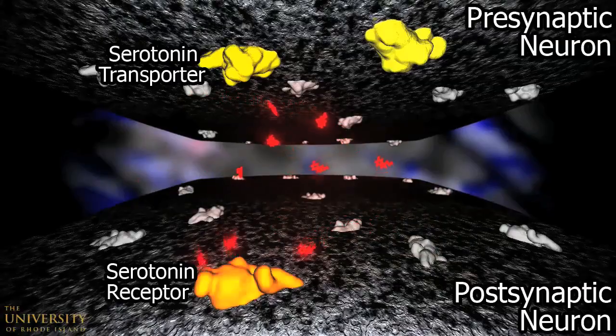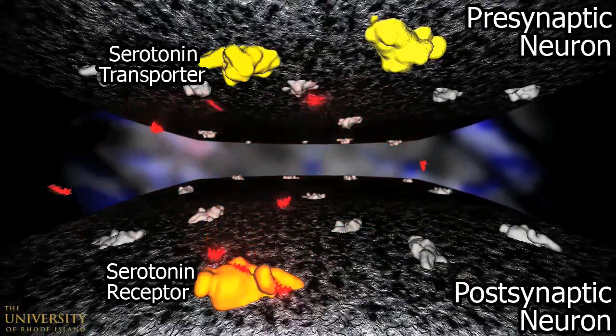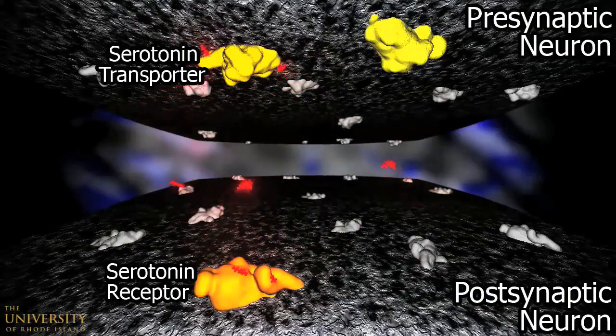Excess serotonin is either deactivated at the synapse by metabolizing enzymes such as monoamine oxidase, or retaken back through the serotonin transporter reuptake protein as highlighted here.